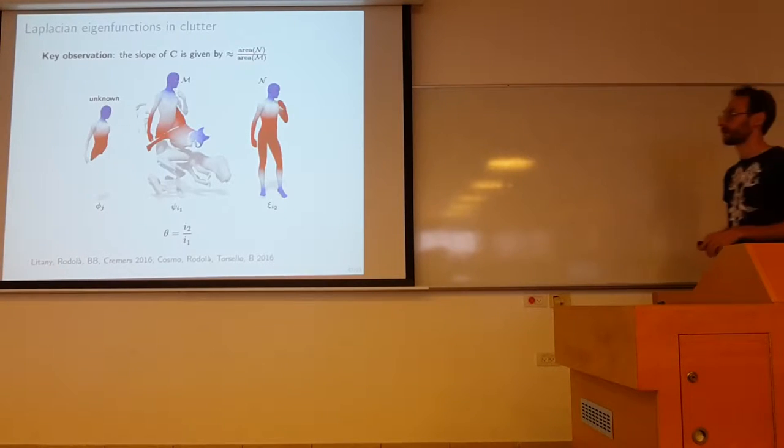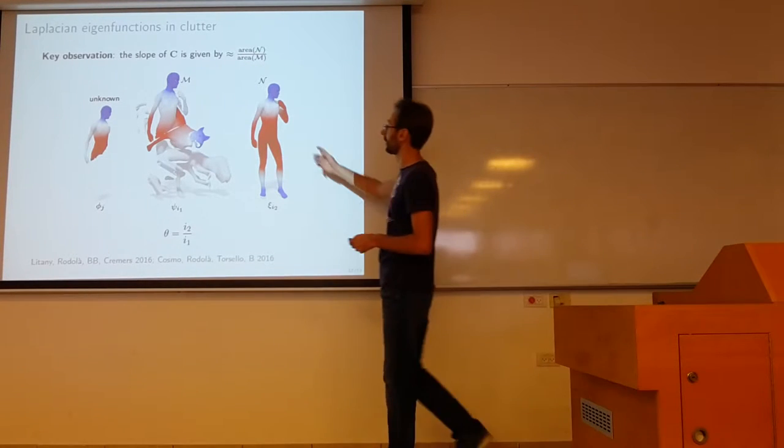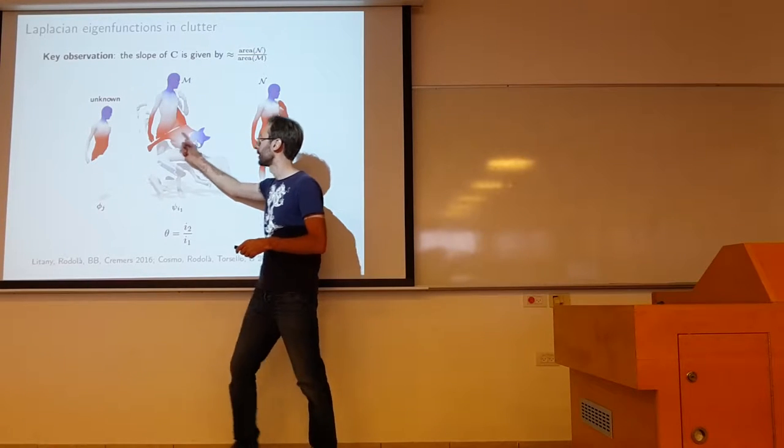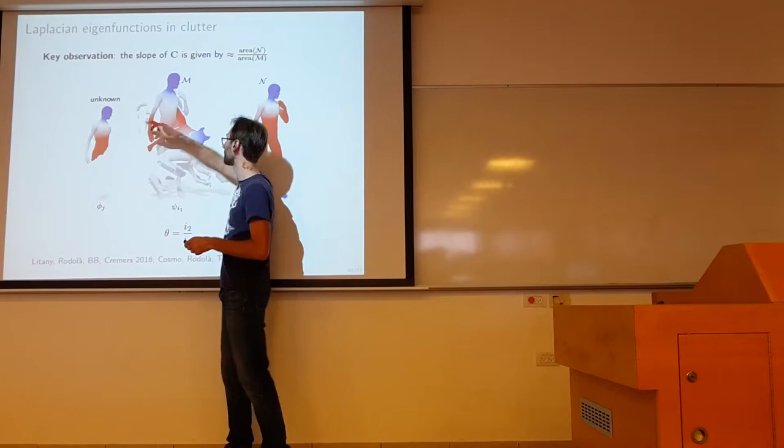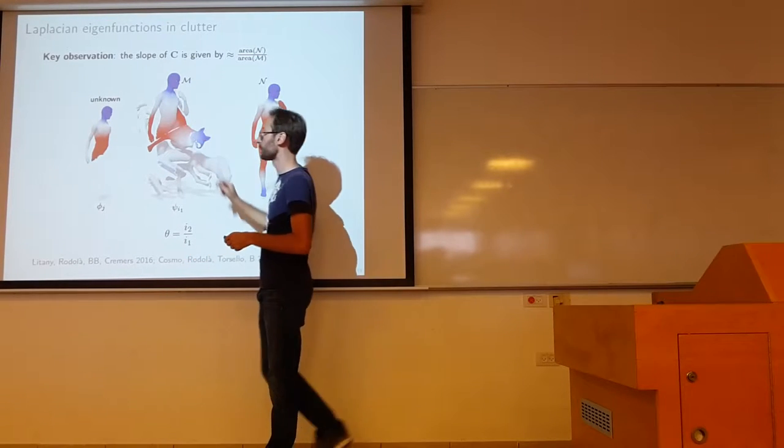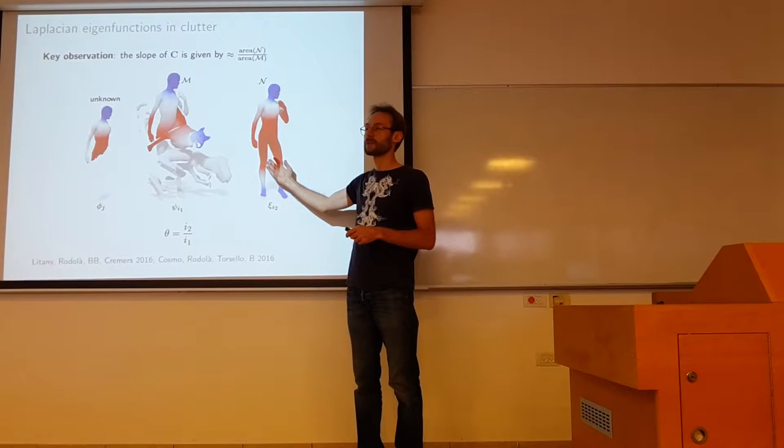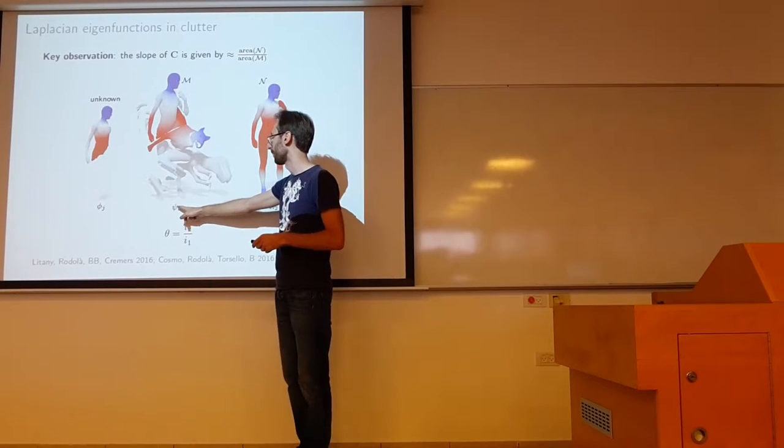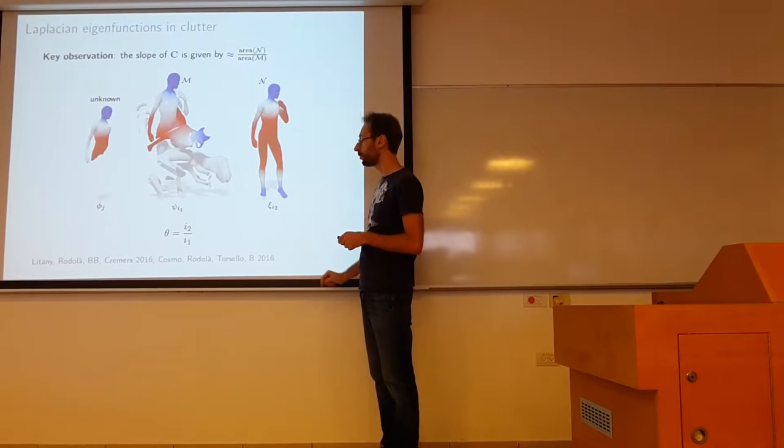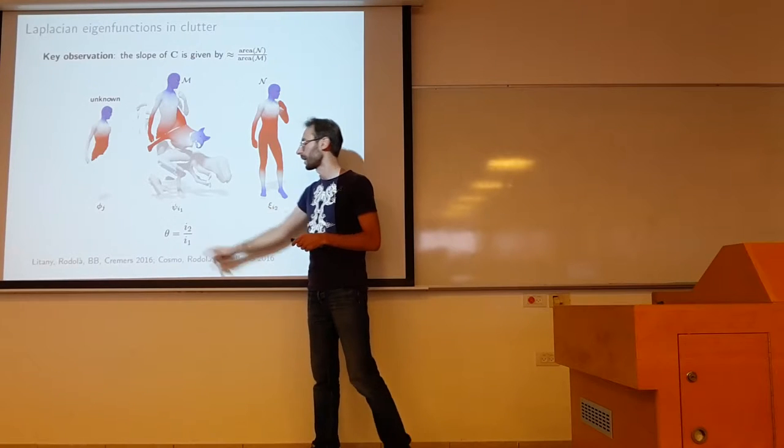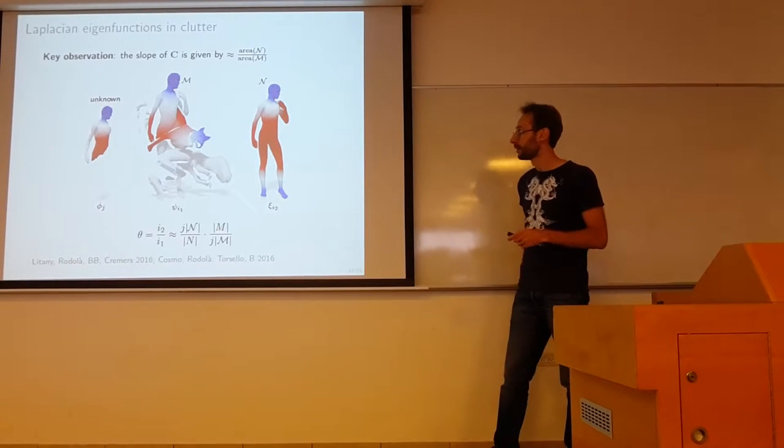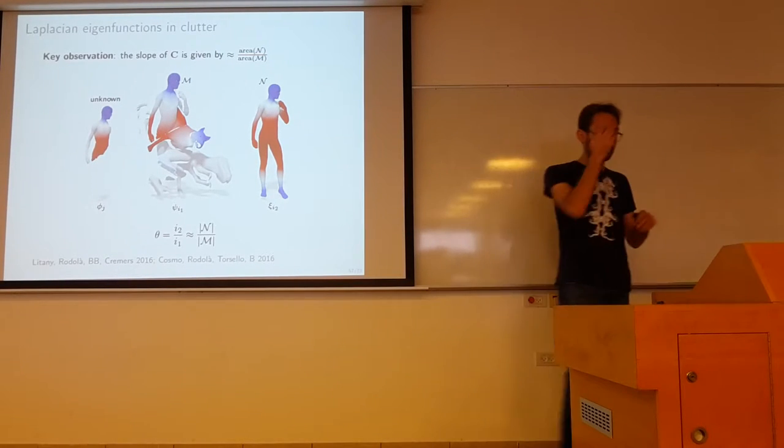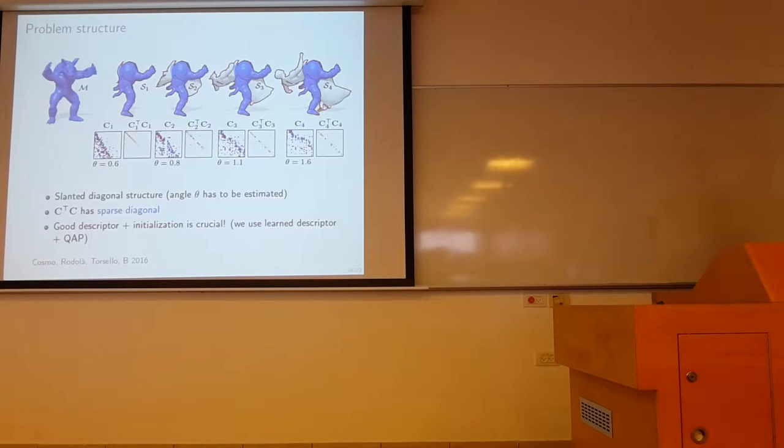So here the same principle that we've seen before works. Basically if you look at the functions of the full shape, the cluttered scene and the part of the shape that is unknown a priori, we will see that the Laplacian eigenfunctions will have the same structure, just at different positions. If this is ψ_ij, this will be ψ_i1 and this will be ψ_i2. So the ratio between this i2 and i1 indices, the Laplacian eigenfunctions spectrum, will depend on the ratio of the areas of the full shape and the cluttered scene.